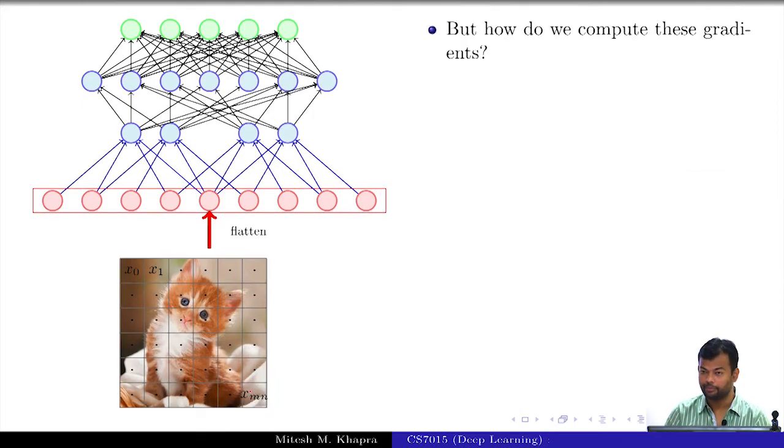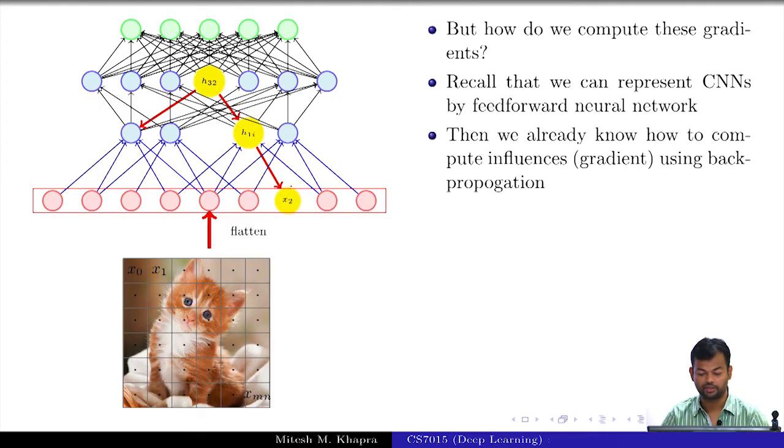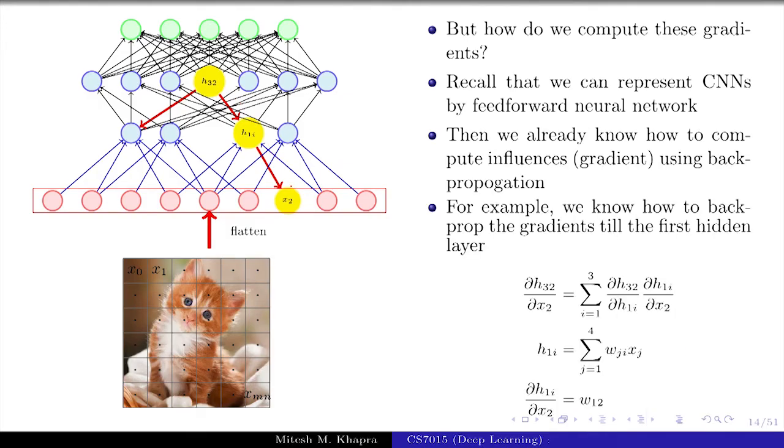Now, the question is how do you compute these gradients? So we will just treat them as a feedforward neural network. We already know how to do backpropagation across these routes and we just need to add one more term to the chain. So, I will just show you what we will do here. So I am interested in ∂h_32/∂x_2, so I will observe that there are 4 paths which go from h_32 to x_2 or rather from x_2 to h_32. So I will just sum up the gradients along these 4 paths. And if I solve it, I will just be left with this.